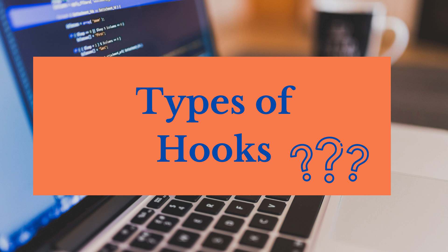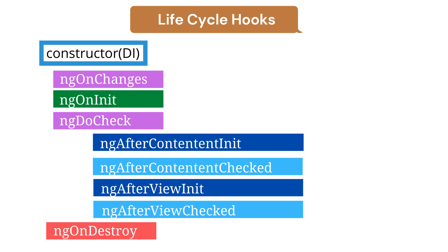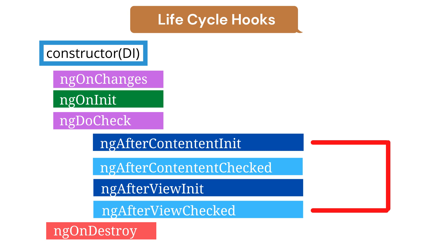Now let's talk about the different lifecycle hooks in Angular. Angular basically offers 8 lifecycle hooks. Out of these 8, not all of them will appear in day-to-day components. Hooks like ngOnChanges, ngOnInit, and ngOnDestroy are used frequently. But hooks like ngAfterContentInit, ngAfterContentChecked, or ngAfterViewInit are used less frequently — depending on the requirement. It's always good to know what the different types of hooks are and which lifecycle hook can be used for a specific purpose.